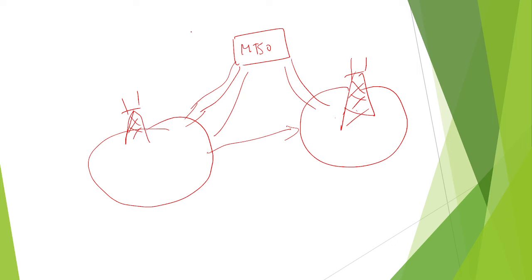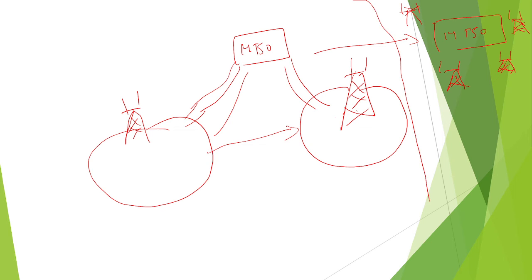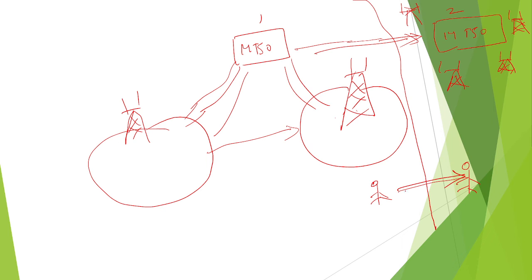Intra-system handoff means from one MTSO to another MTSO. For example, this MTSO has one more MTSO next to it, also having seven cell sites. If the user is moving from one MTSO area to another MTSO area, the current MTSO will send a request to the next nearest MTSO to take care of the present user's call. The call is handed off to the next MTSO — this is called intra-system handoff.